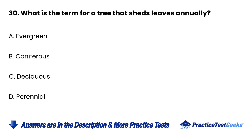Question 30: What is the term for a tree that sheds leaves annually? a. Evergreen. b. Coniferous. c. Deciduous. d. Perennial.